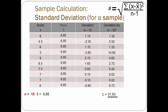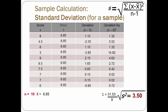Let's do this again, assuming that the 10 family members we got data from were not my entire family, but a sample of my family. That means we need to change the formula so that the denominator is n minus 1 instead of n. The initial calculations are the same, except that we now divide by n minus 1, or in this case by 9, to get the variance of 3.50. Now when we take the square root of that, we get a standard deviation for our sample of 1.87.